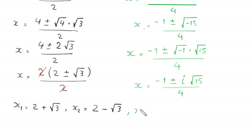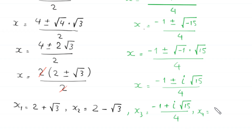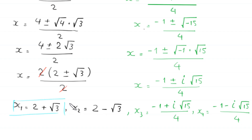Since the discriminant is negative, the solutions are complex: x₃ equals negative 1 plus i times root 15, all over 4, and x₄ equals negative 1 minus i times root 15, all over 4. So we have four solutions: 2 plus root 3, 2 minus root 3, (negative 1 plus i root 15) over 4, and (negative 1 minus i root 15) over 4.